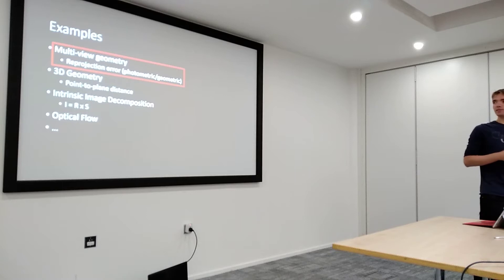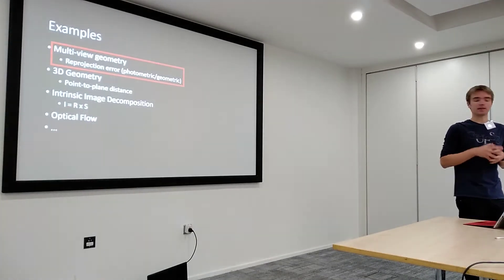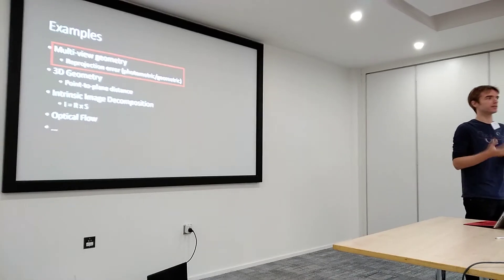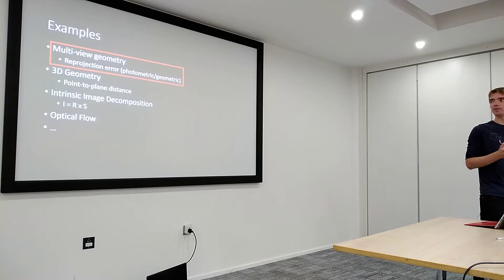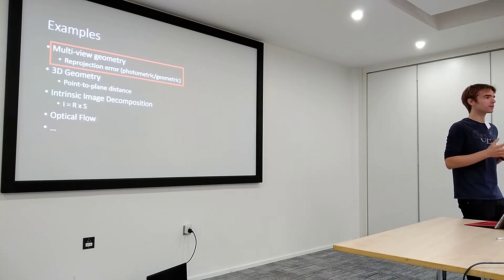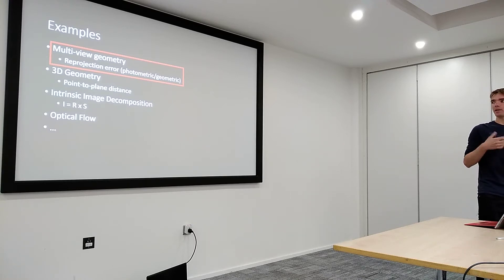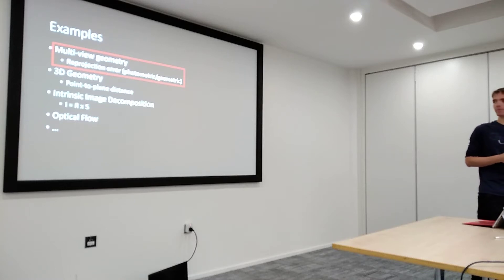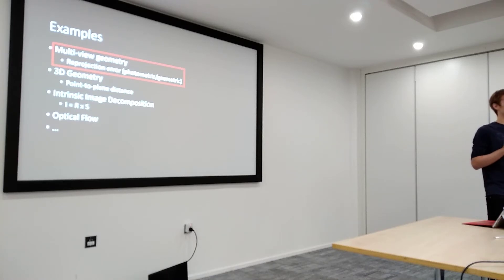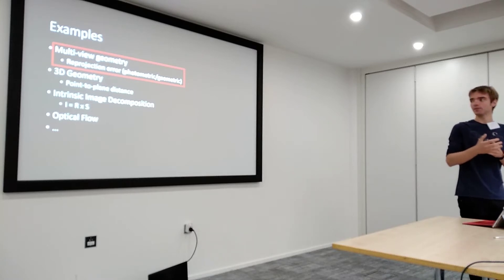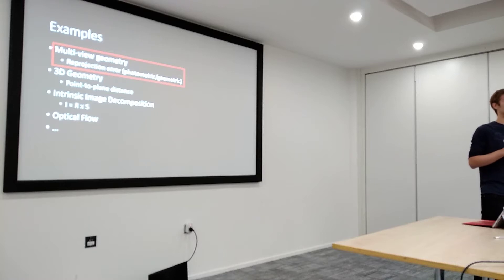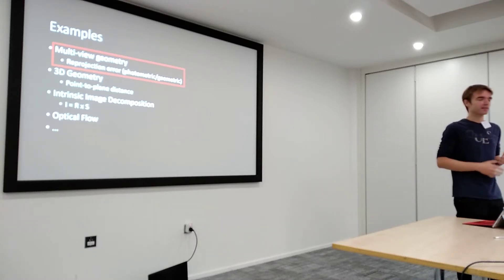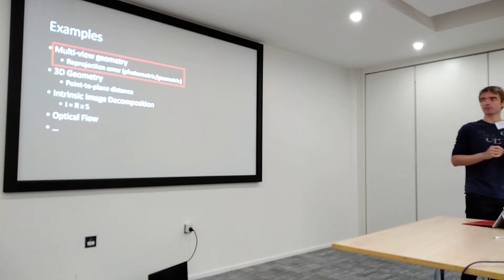Geometry doesn't only occur in a multi-view sense — it also arises in many other areas in vision, including 3D geometry in general. With point clouds or meshes you can compute the point-to-plane distance. In graphics, we have self-consistency relations such as the image formation process, where you have a multiplicative relation between reflectance and shading that composes to give your image. There's also optical flow, where you have 2D geometric relations between pixels without any 3D model, but you can still set up a loss function based on 2D geometry. In this talk I'll focus mainly on multi-view geometry and specifically the reprojection error.